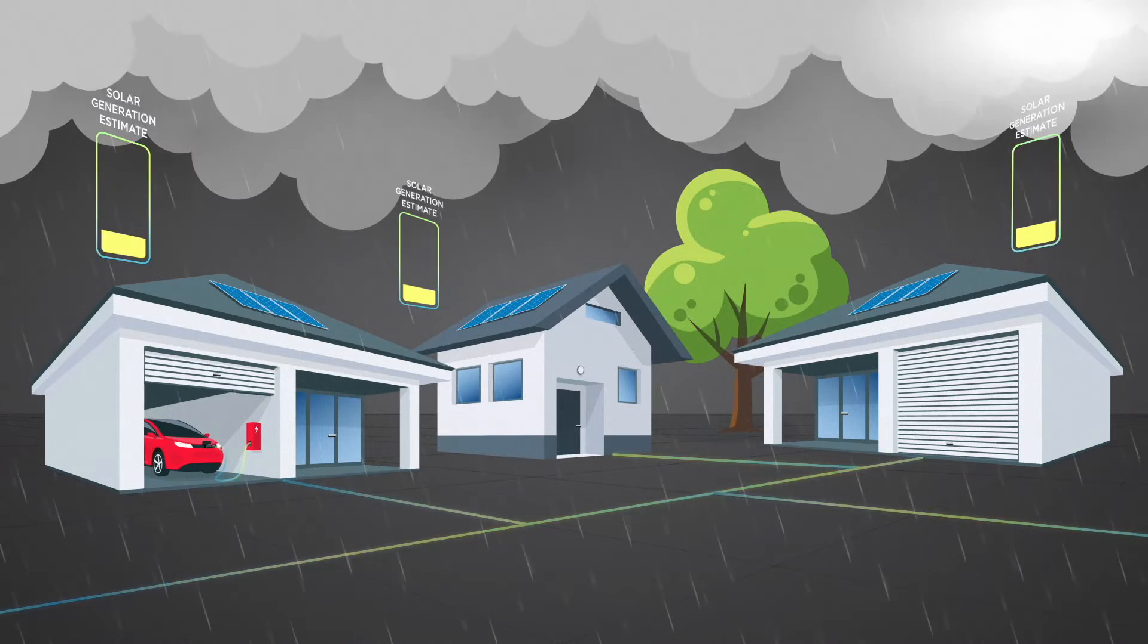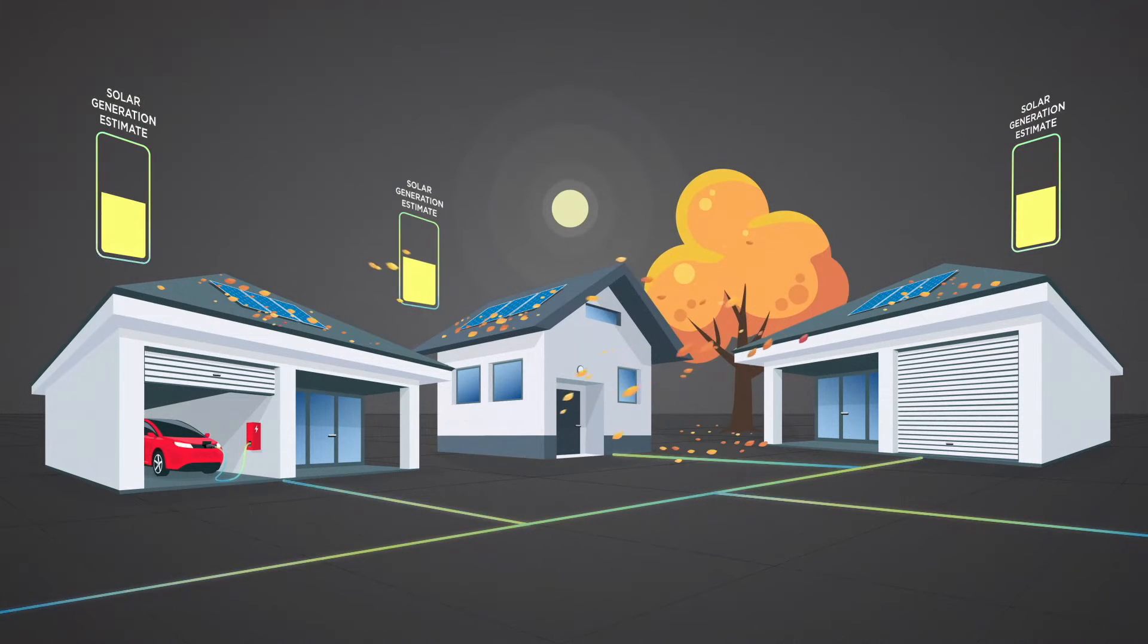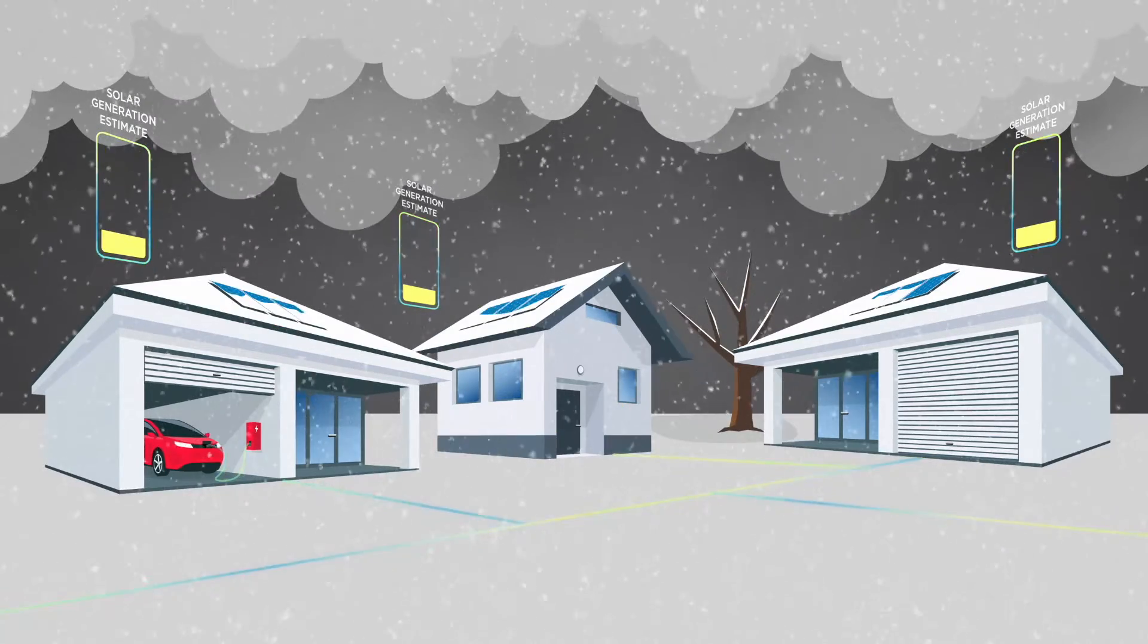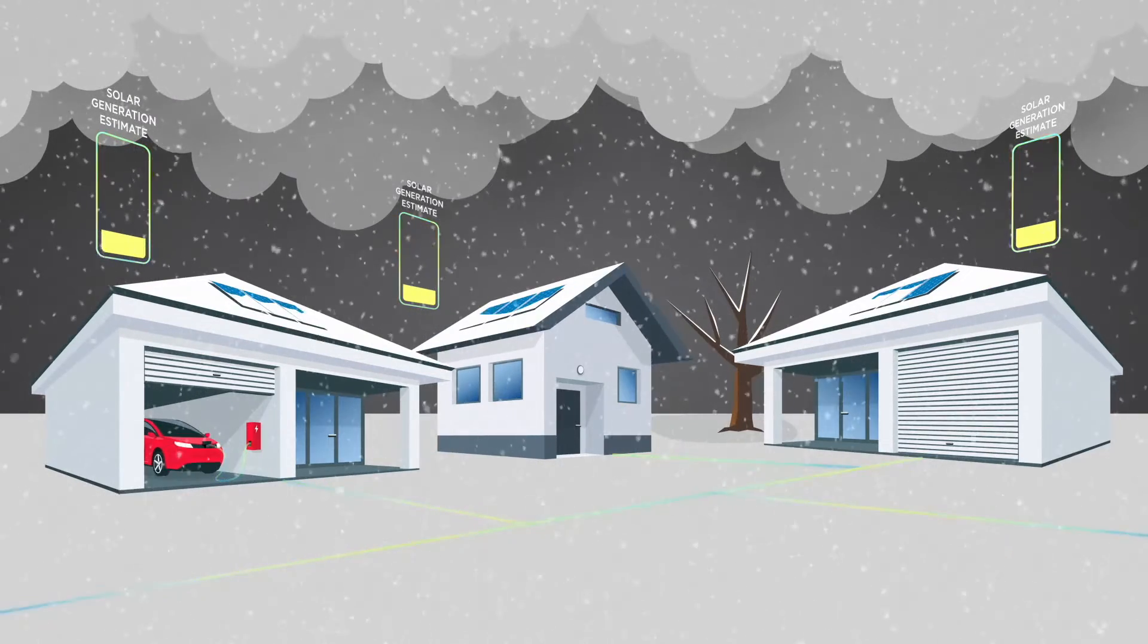These include changes in weather, shading, soiling losses, location, aging, and power production rating of the respective solar units.